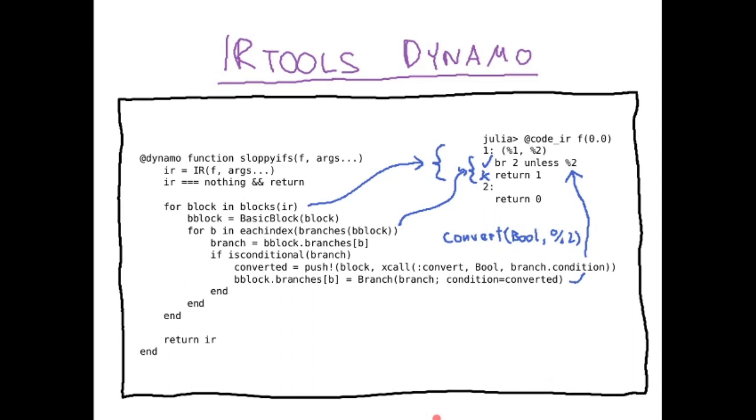And this specific dynamo shown here is the implementation of this sloppy_ifs transformation shown before. So you walk through all blocks, you walk through all branches within the blocks, you search for the conditional branches, and if you find one, you replace it by a convert statement. You add one convert statement to the condition.